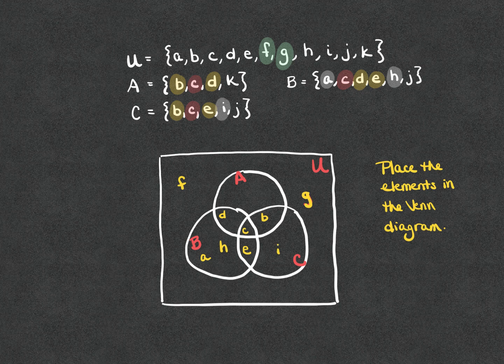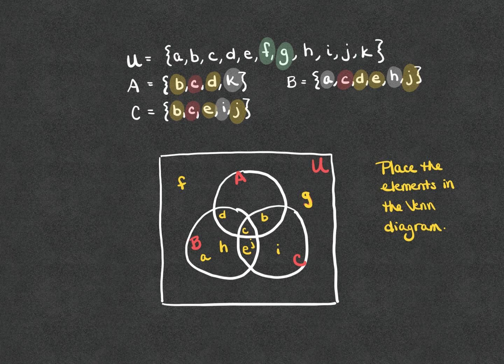Element J is another shared element — J is in both subsets B and C, so I'm going to place J there with E. And then last but not least, we have element K, which is in subset A and subset A alone. That is how we place the elements in this three-subset Venn diagram.